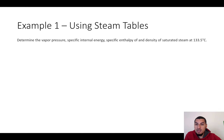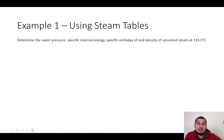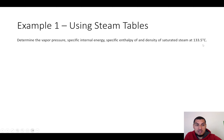The first example asks us to determine the vapor pressure, specific internal energy, specific enthalpy, and density of saturated steam at 133 degrees Celsius. A few things to notice: it's steam, so we can use steam tables. It's saturated steam, so we look into the saturated steam tables, not superheated or subcooled. Since we have only temperature as the given information, we will most likely use the temperature table.